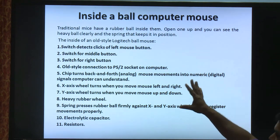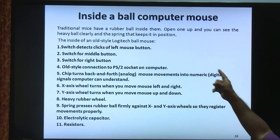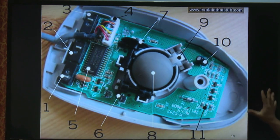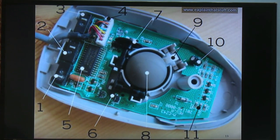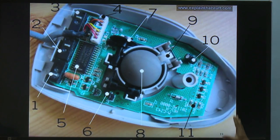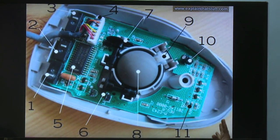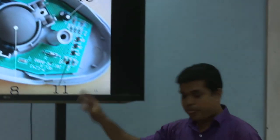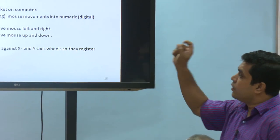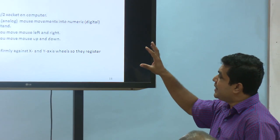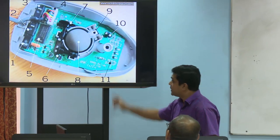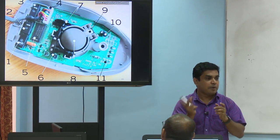This is the mechanical mouse. Number 1: a switch detects the click of the left mouse button. The mouse has a left button and a right button.